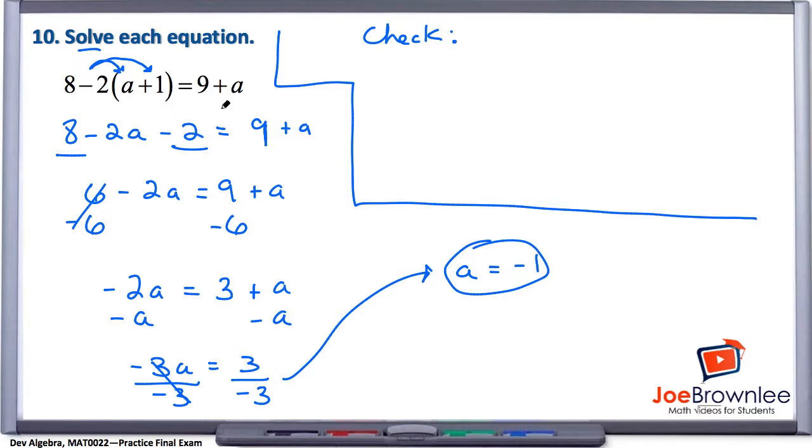So what we're going to do is take this value, plug it in, and see what happens. We have 8 minus 2 times a, but we're going to plug in the value that we're claiming a to be. So negative 1 plus 1, close those parentheses, equals 9 plus a, and a is negative 1. Let's go ahead and clean this up and see what happens.